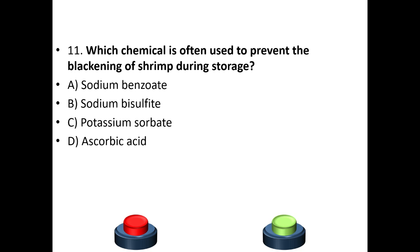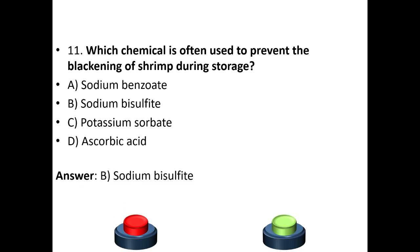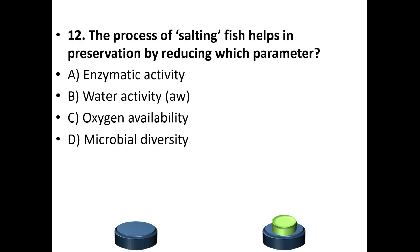Eleventh question: Which chemical is often used to prevent the blackening of shrimp during storage? Options: sodium benzoate, sodium bisulphite, potassium sorbate, ascorbic acid. The answer is option B — sodium bisulphite.